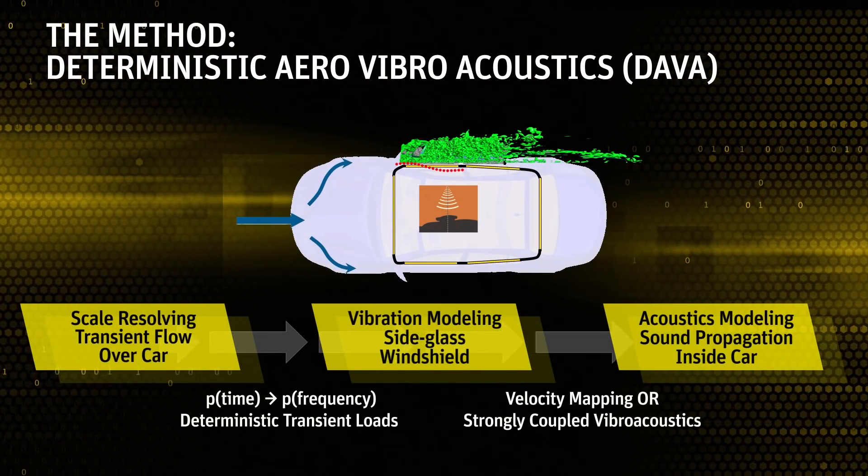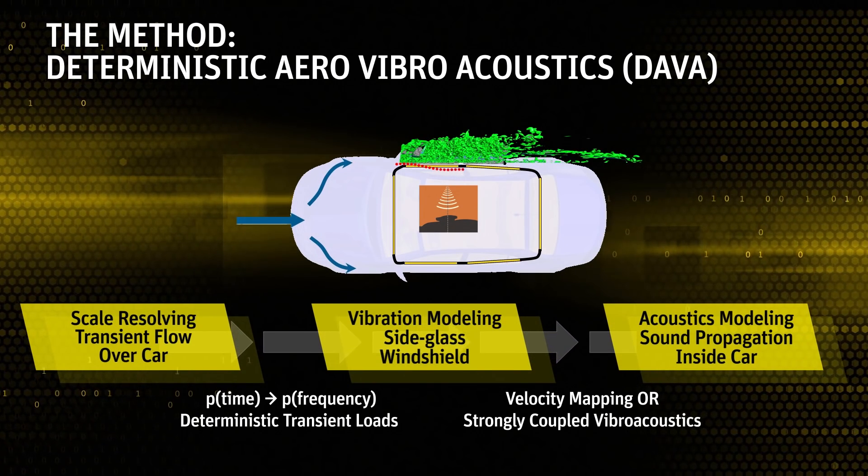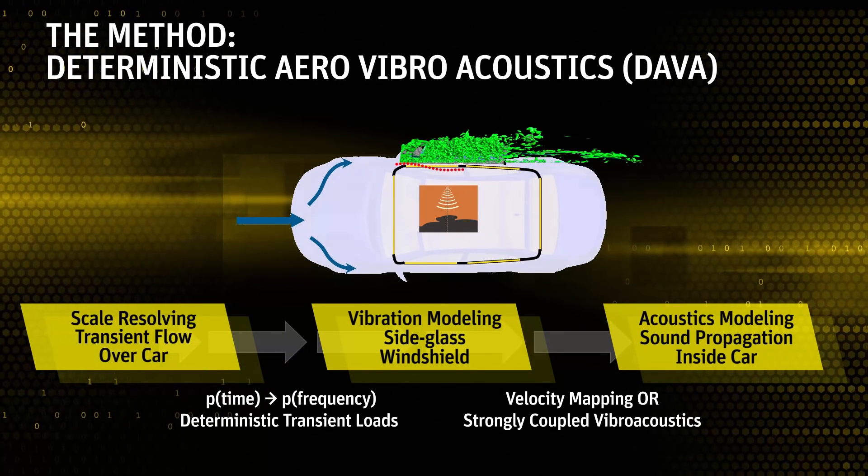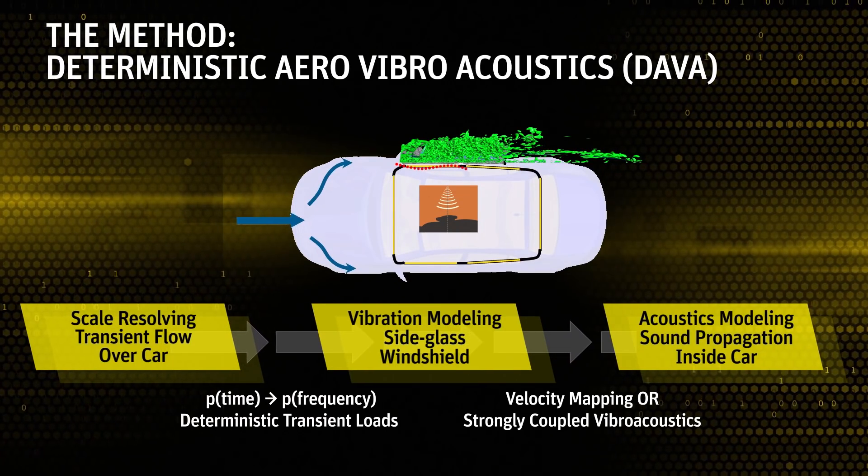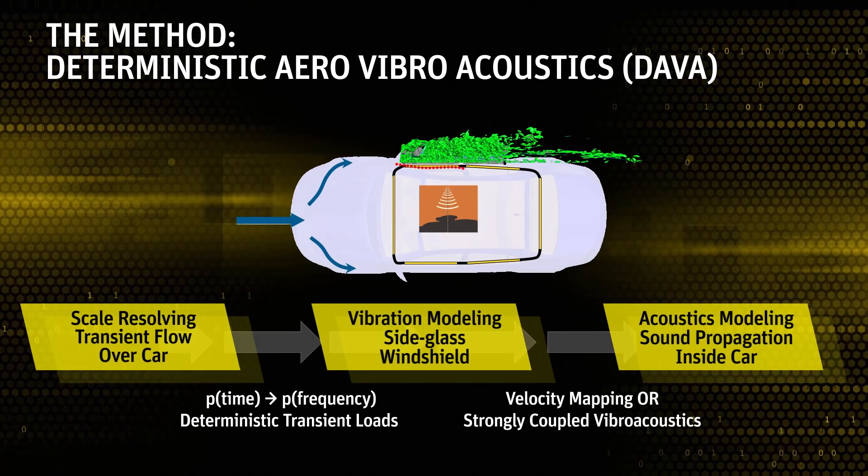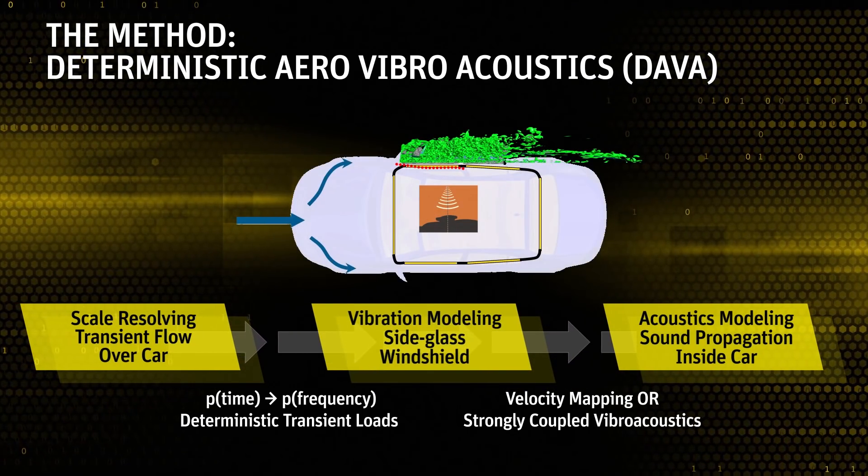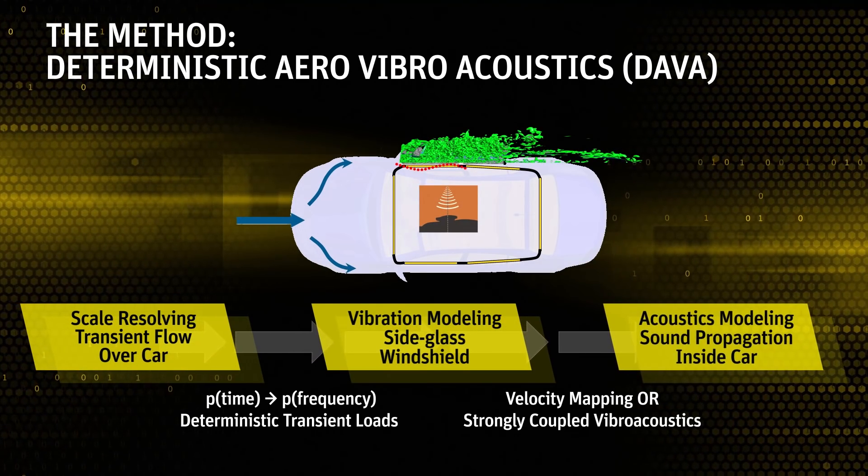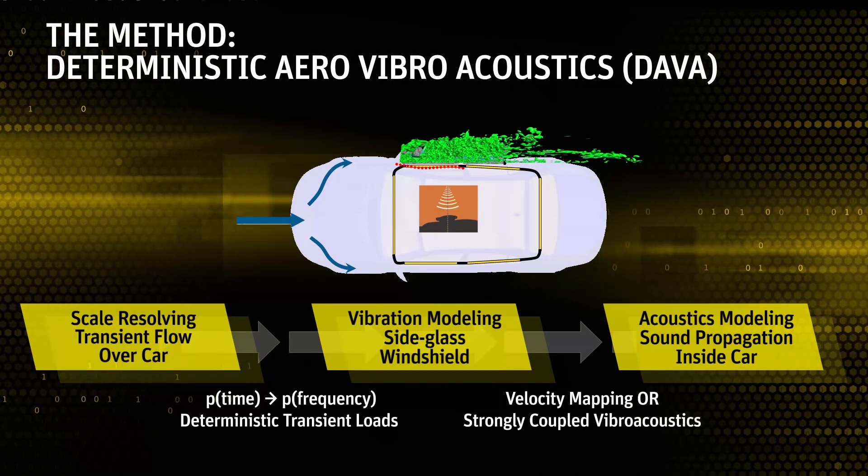This schematic shows the turbulent flow field near the A-pillar and the side view mirror, which is predicted by a scale-resolving transient CFD simulation to account for the time-dependent pressure field acting on the outer surface of the vehicle body. After transforming the pressure field in the frequency domain, it acts as a boundary condition for the side glass that excites vibration. These glass vibrations in turn excite the air inside the closed cabin and the acoustic perturbation travel at the speed of sound through the cabin to the ears of the driver.